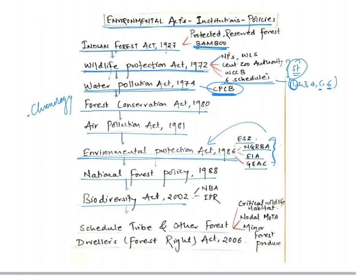Then we have the Biological Diversity Act related to the National Biodiversity Authority and IPRs. Recently, the Forest Rights Act was asked — Critical Wildlife Habitat is defined under this act, and the Nodal Ministry is the Ministry of Tribal Affairs. While studying acts, one should know their aim and objective, important terms, statutory bodies under them, and how center and state are related to the act. This is how one should approach environment acts, institutions, and policy-related aspects.